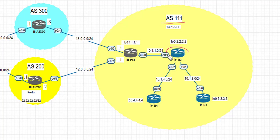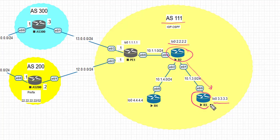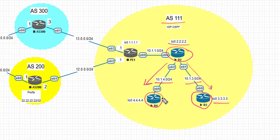We have R2 acting as the route reflector with the loopback IP already set. On the right-hand side we have the first route reflector client, R3, connected to R2 on a directly connected interface with prefix 10.13.0.0/24. On the left side we have the second route reflector client, R4, connected over the directly connected prefix 10.14.0.0/24.